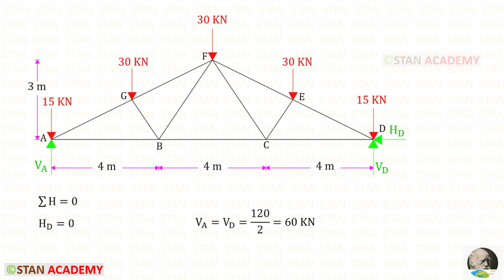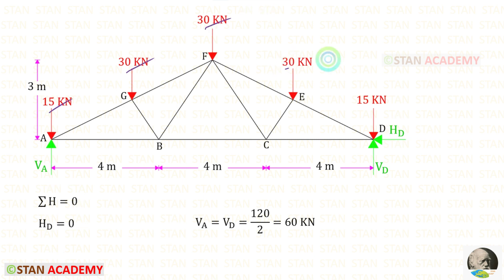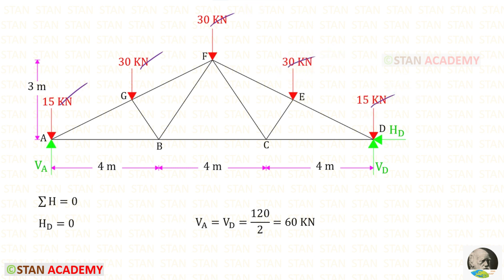Let us apply the rule sigma H equals 0 and find HD. In this truss there is no horizontal load, so HD will be 0. This truss is symmetrical and the loading is also symmetrical, so we can easily find VA and VD. We add all the loads to get 120, then divide by 2, giving VA and VD each equal to 60 kilo Newton.